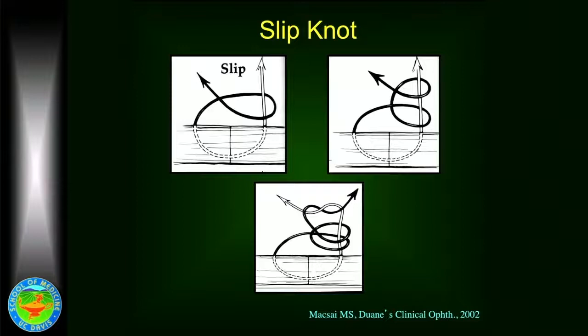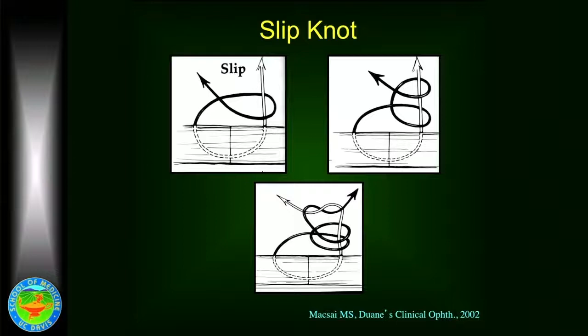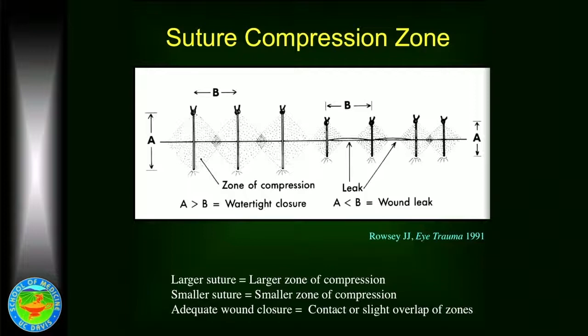If you do not have a wound that's under tension, a better option is a slip knot. This is done not three-one-one but one-one-one in different directions. This is the knot used for most cases — it produces a very small knot which is very easy to rotate and allows you complete control over the tension of the wound. There's a wonderful book by Marion Maxi which is all about suturing in ophthalmology; it comes with a CD and is very useful to have in your library.